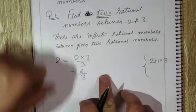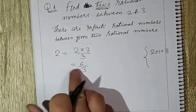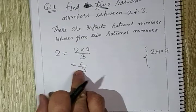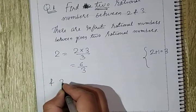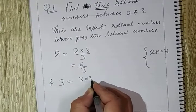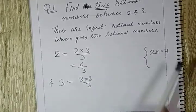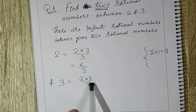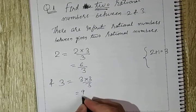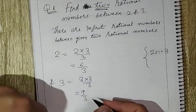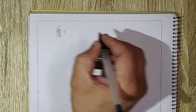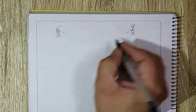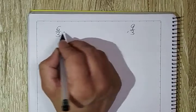After writing 2 as 6 by 3, we understand the number is the same — 6 divided by 3 still gives 2. Our second number is 3. We multiply both numerator and denominator of 3 by 3, giving us 9 by 3. So now we have 6 by 3 as our first number and 9 by 3 as our second number. Between 6/3 and 9/3 we can see the numbers in between.